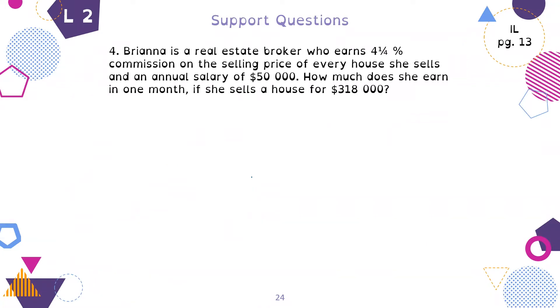Number four, Brianna is a real estate broker who earns 4.25% commission on the selling price of every house she sells and an annual salary of $50,000. How much did she earn in one month if she sells a house for $318,000? To me there's two pieces: we need to figure out the commission and the salary.